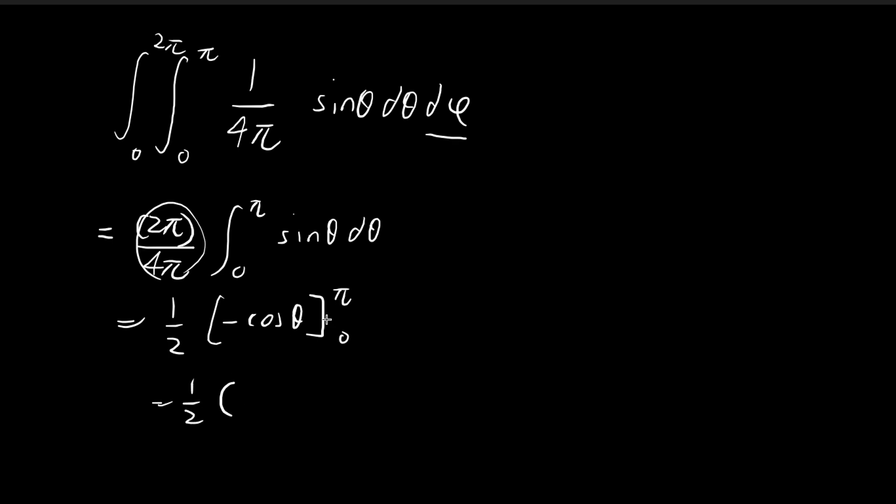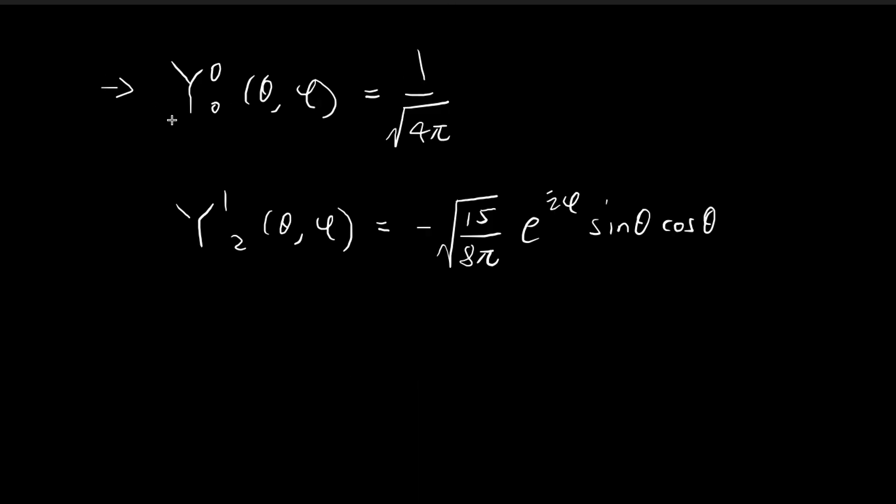And then cosine pi is equal to negative 1, so we have negative of negative 1, which is positive 1. And then we minus negative of cosine 0. And cosine 0 is equal to 1, so we minus negative 1. So this is equal to 2 divided by 2, so of course it is equal to 1. And so there we have it. We have checked that this first function here is indeed normalized.